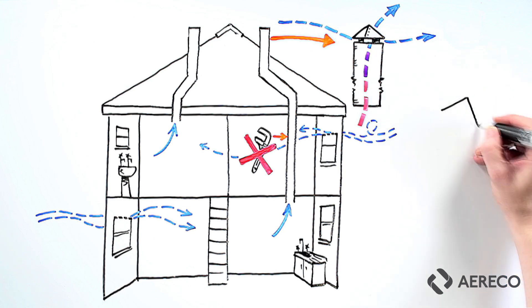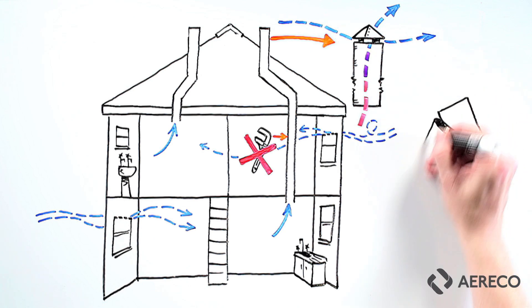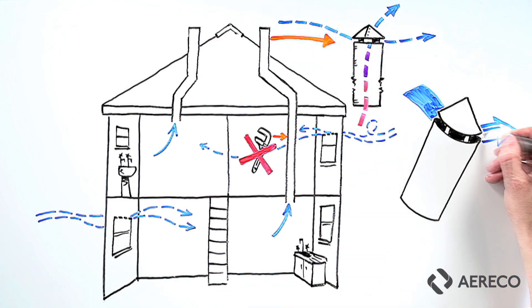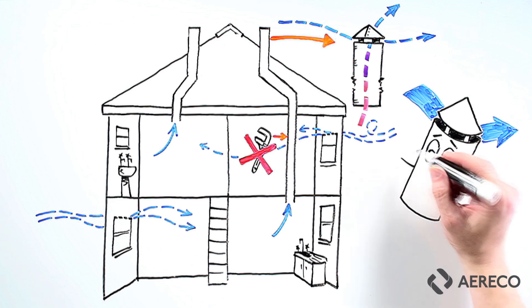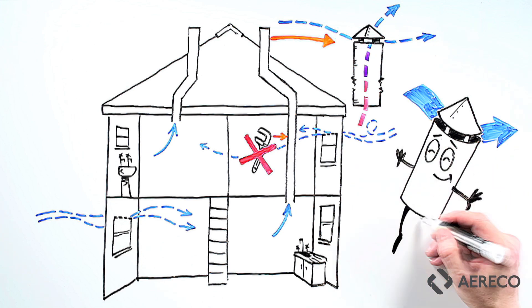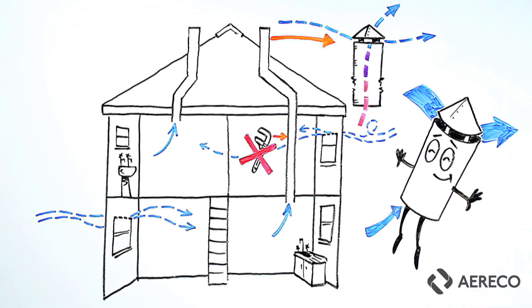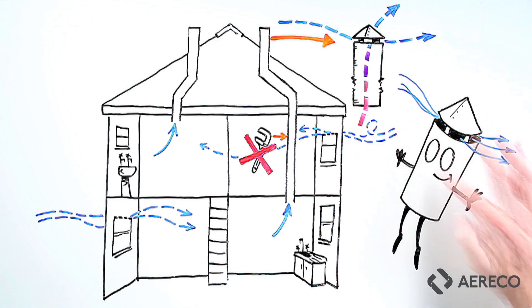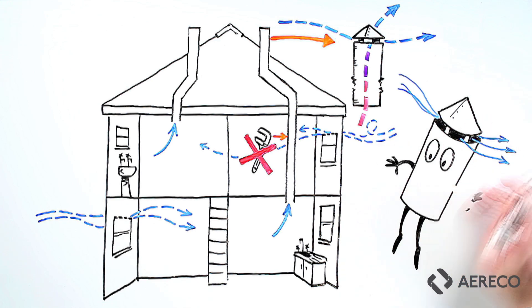Did you know, passive stacks like fires rely on wind and temperature difference to work. This means that even if designed correctly, due to wind and temperature changes outside, there are times when it will work better than others. Passive stacks also operate at very low pressures. This means that if you close vents or the stack is not designed and installed correctly, it can easily affect its ability to function properly.